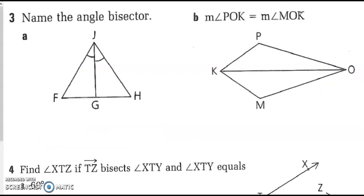Three. We're going to skip B, but we'll do A. It says name the angle bisector. So we have this congruent over here, so it bisects it. So we'd have ray JG. And again, I said we were going to skip B, but we'll go ahead and do it. So we have POK is congruent to MOK. So again, these are congruent. So in this case here, we have ray OK is the angle bisector.